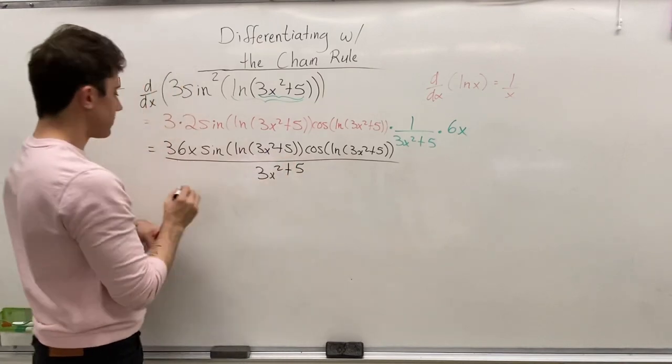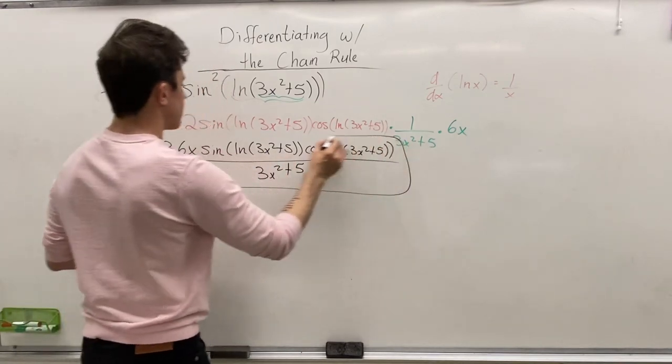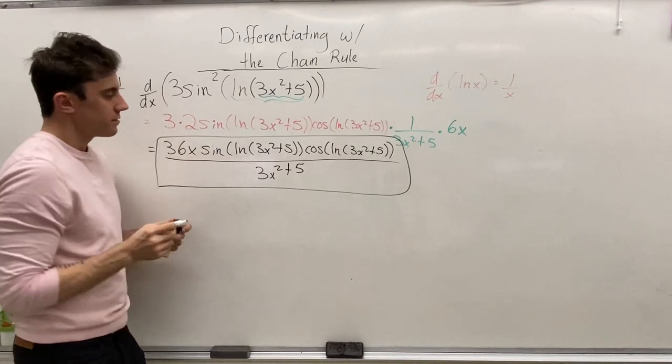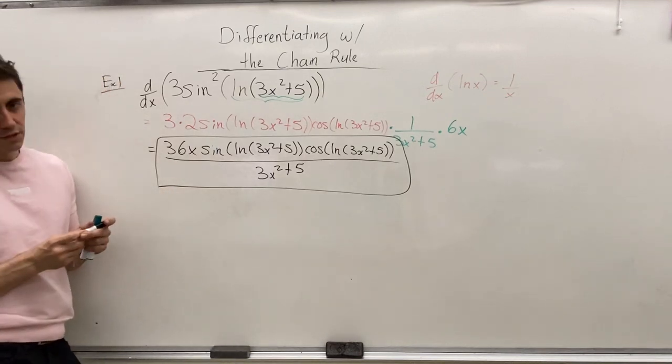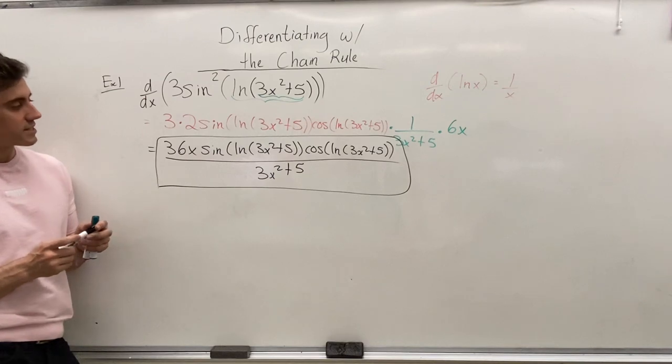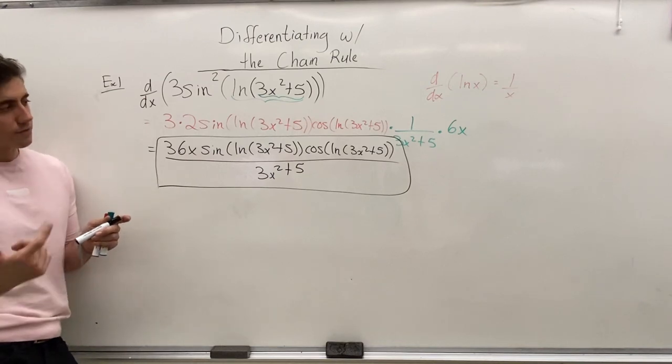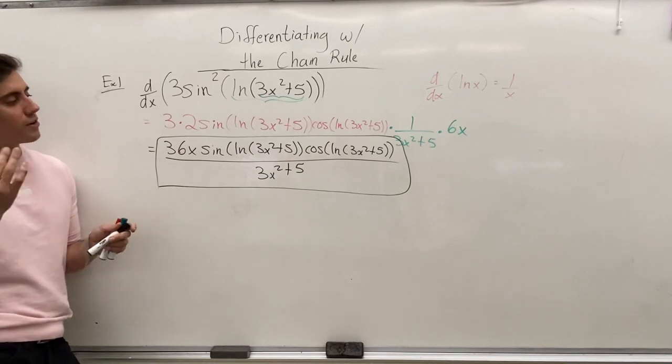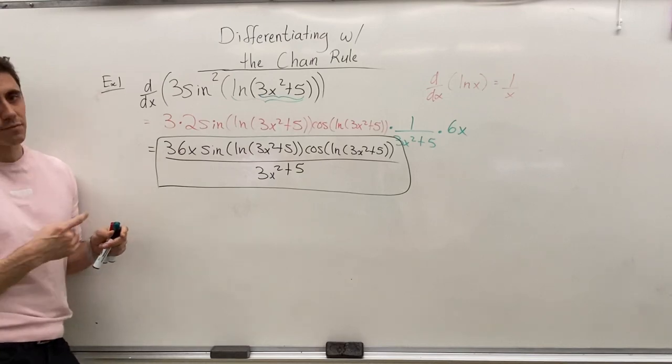And so, here is our simplified solution for the derivative of our function. So, we have 36x times the sine of ln of 3x squared plus 5 times the cos of ln of 3x squared plus 5, all over 3x squared plus 5.